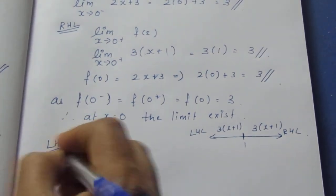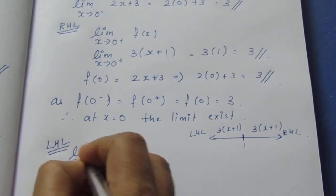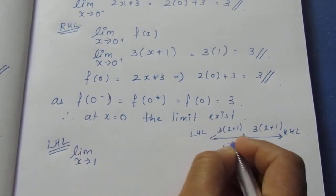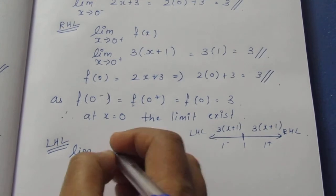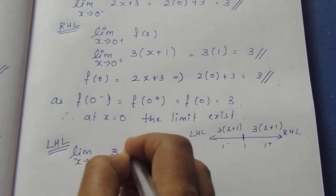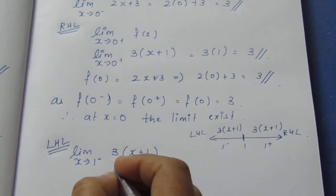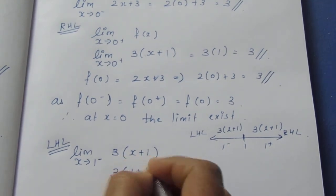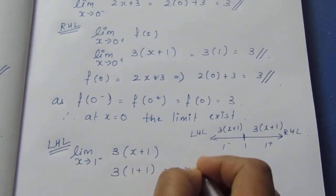Now let's find the limit at x equals 1. For the left-hand limit, limit x tends to 1 negative: since 1 is greater than 0, we use f(x) equals 3 into (x plus 1). Substituting x equals 1, we get 3 into (1 plus 1) equals 3 into 2, which equals 6.